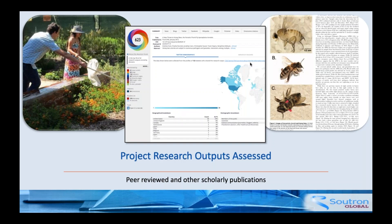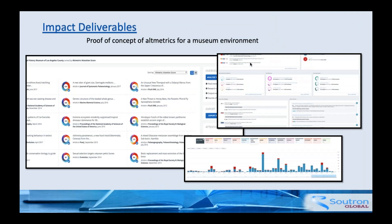So let me start with the project. We worked with the Altmetric company and tracked our research as an institution. As an individual researcher you can do your own tracking, but you typically need to license software to look at it from an institution-wide standpoint. We did that, and Dr. Brian Brown — the researcher on the left, an entomologist — gave his permission to use his research in this presentation. He works on flies, insects, and honeybees, and so this is his peer-reviewed and other scholarly publications that we'll talk about.